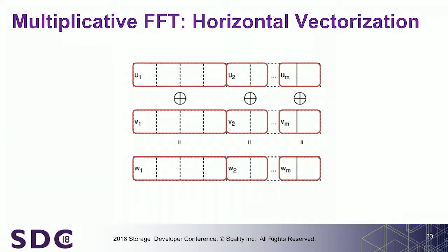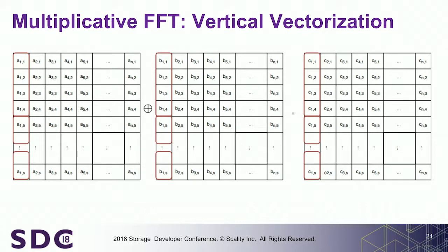We had two approaches. The first was horizontal vectorization, where you take the first byte of the first fragment, the first byte of the second fragment, and so on, compute a vector and apply vectorized operations. We found out that vertical vectorization — where you take the first byte of the first fragment, the second byte of the first fragment, the third byte of the first fragment, and apply the FFT on itself — is much faster because of cache effects.